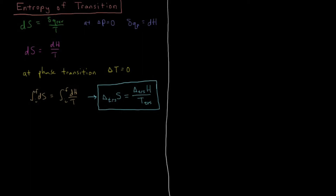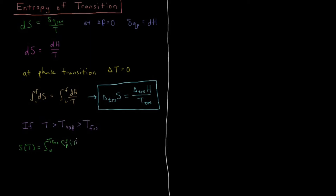Let's say that we have some temperature which is greater than the temperature of vaporization for that substance — the boiling temperature — and it's also greater than the melting point or temperature of fusion for that substance as well. What is the entropy at a given temperature for this gas, since it is both melted from the solid and evaporated from the liquid? Our value for S(T) is going to start with the integral from zero to the melting temperature T_fus of the constant pressure heat capacity of the solid, C_s, over T, dT.